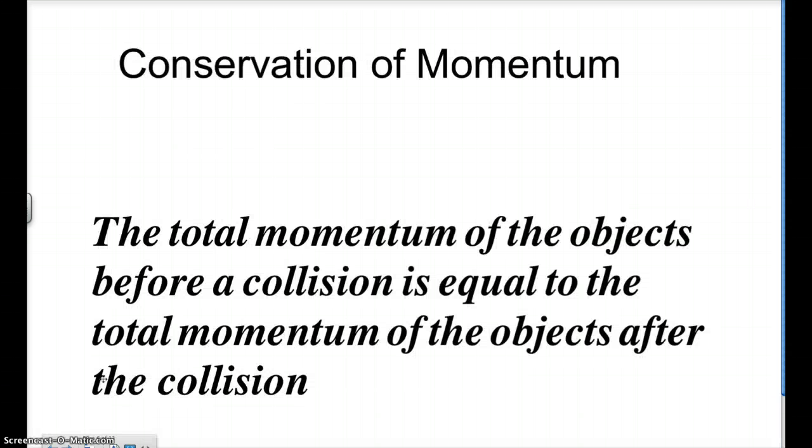All right, now things get a little bit interesting. There's this thing called the conservation of momentum. As you can read on the screen, it says basically the total momentum of the objects before a collision is equal to the total momentum of the objects after a collision. So basically, the whole idea here is that if you have one object hit another object or collide with another object or pick up another object, the total momentum will still be exactly the same.